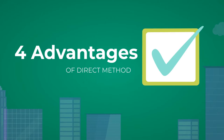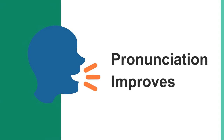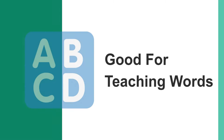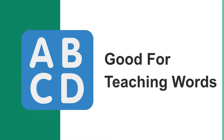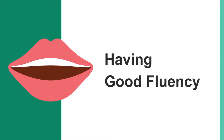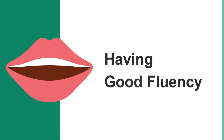Here are four advantages of the direct method. One: pronunciation improves — it can make your pronunciation clearer and better. Two: it is the best way for teaching vocabulary such as words and idioms. Three: it helps learners develop good fluency because you don't need to think before speaking, just speak out. Four: students feel more confident speaking English as you don't need to translate anything in your brain.